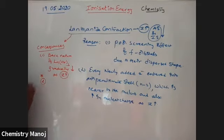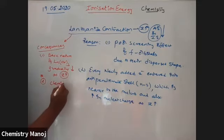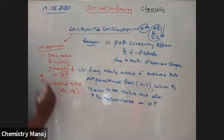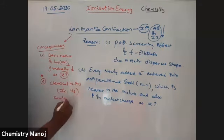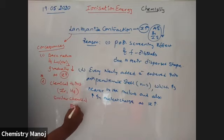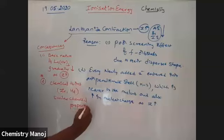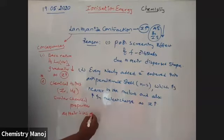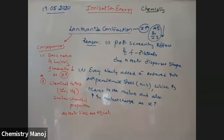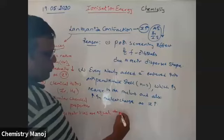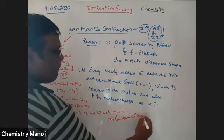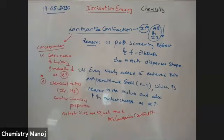The second important consequence is chemical twins. Zirconium and hafnium have similar chemical properties because their sizes are equal due to lanthanide contraction. These are the most important consequences of lanthanide contraction.